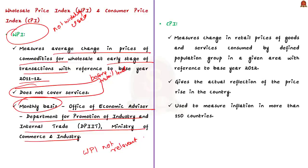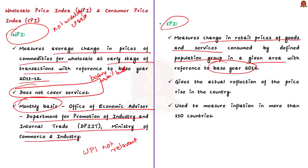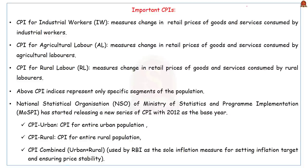Moving on to Consumer Price Index or CPI: it measures the increase in price experienced at retail shops. CPI can be defined as a measure of change in retail prices of goods and services consumed by a defined population group in a given area with reference to a base year. Note that CPI includes services, giving a more actual reflection of price rise in the country. The base year for CPI in India is 2012. Within CPI we have three types, since different segments of the population have different consumption patterns and purchasing power — a single CPI cannot give a holistic picture.